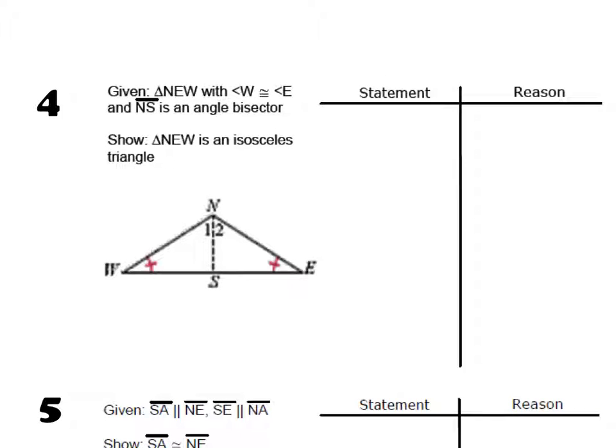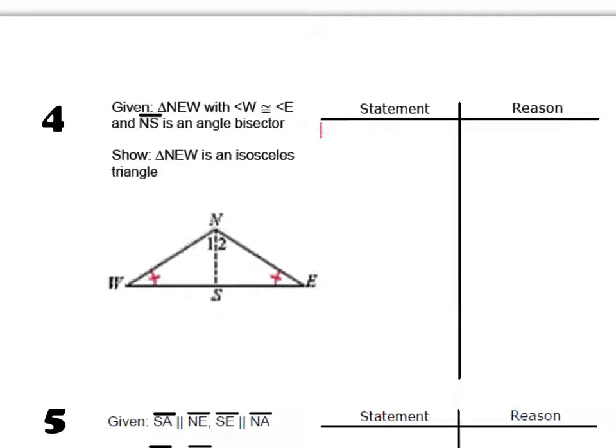Number four. We're told triangle NEW has angles W and E congruent, so angle W is congruent to angle E. That's given. And we're told that NS is an angle bisector.